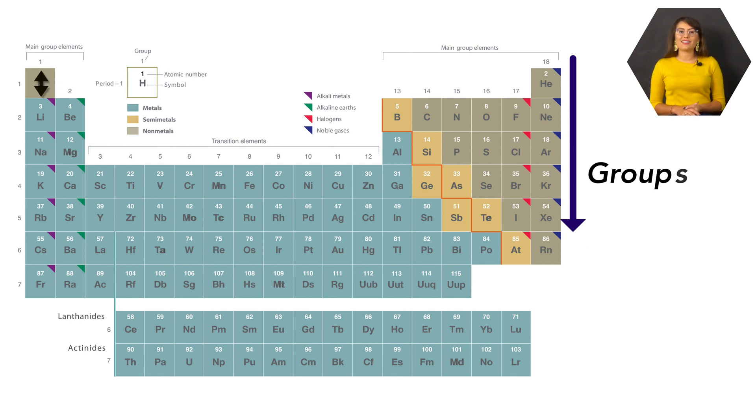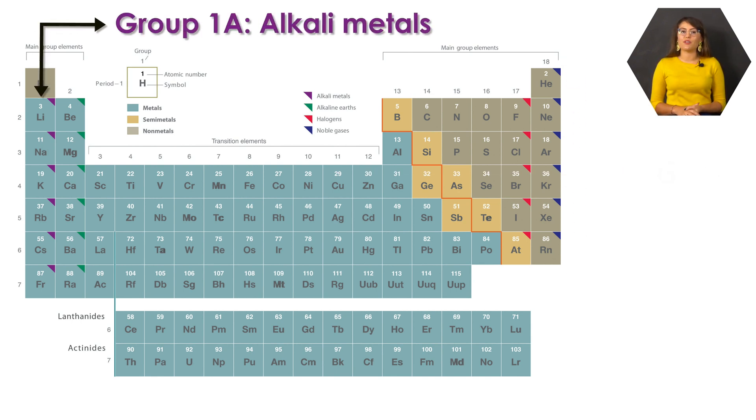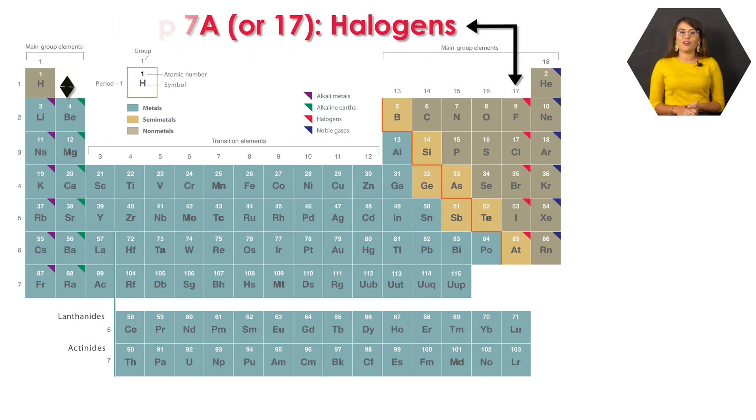For example, group 1 is known as the alkali metals, with the exception of hydrogen. Group 2 are the alkaline earth metals, and group 17, also known as 7A, is known as the halogens.